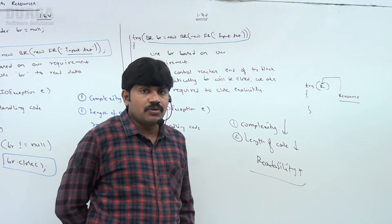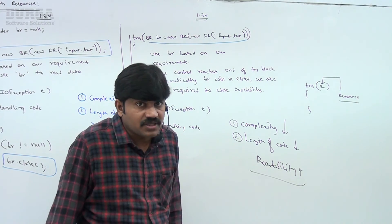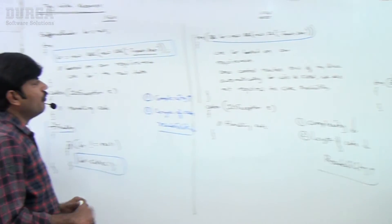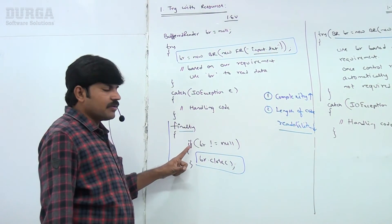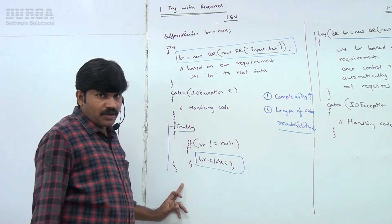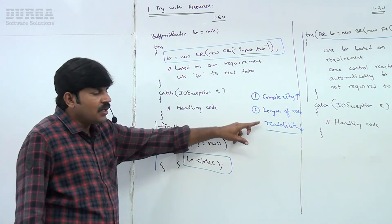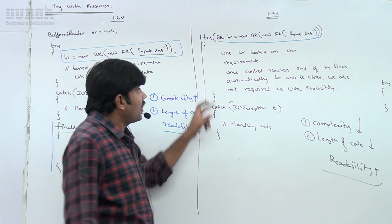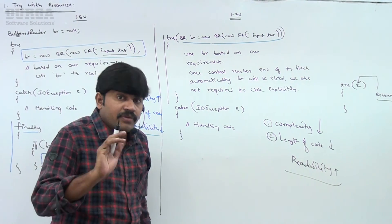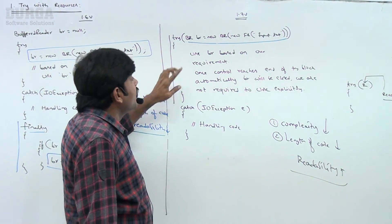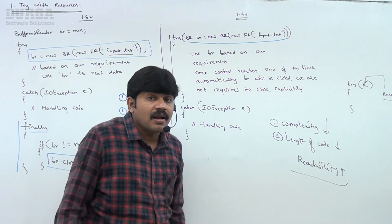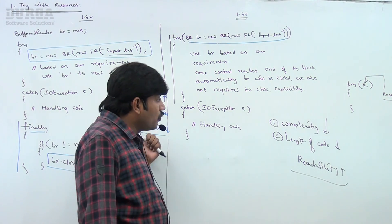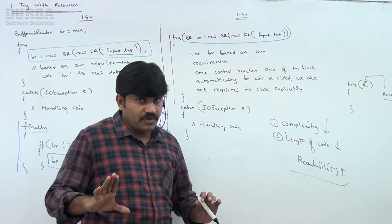You may have many more doubts — can I take multiple resources or not? There are other things like final variables related to resources. Those things I will explain, but for now get the basic idea. Until 1.6 version, we had to close resources opened in the try block inside the finally block — complexity increases, code length increases, readability goes down. To overcome this, try-with-resources came in 1.7. Once the try block completes, resources are closed automatically — not required to close explicitly. The advantages are very clear.